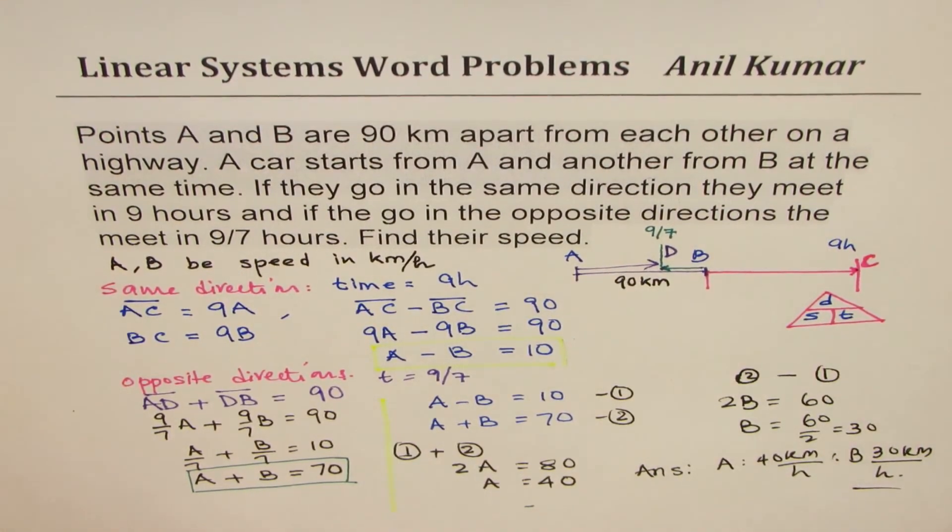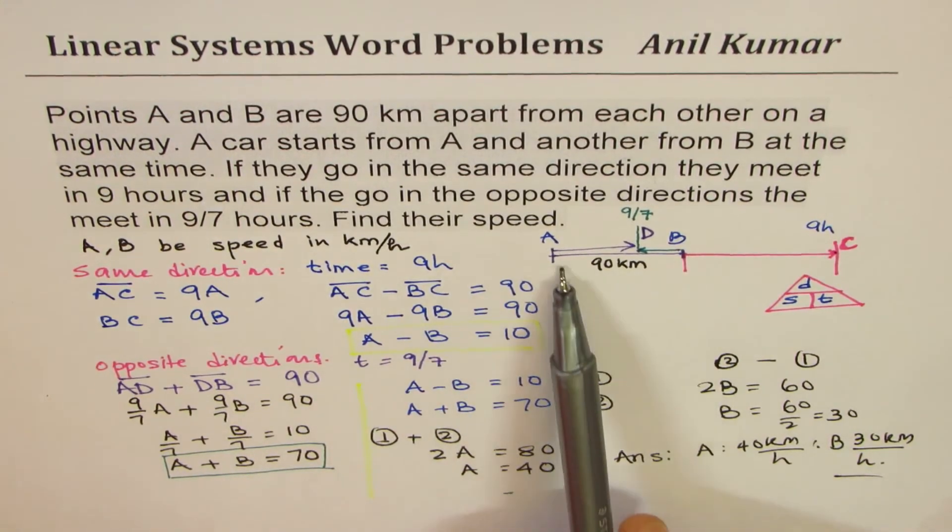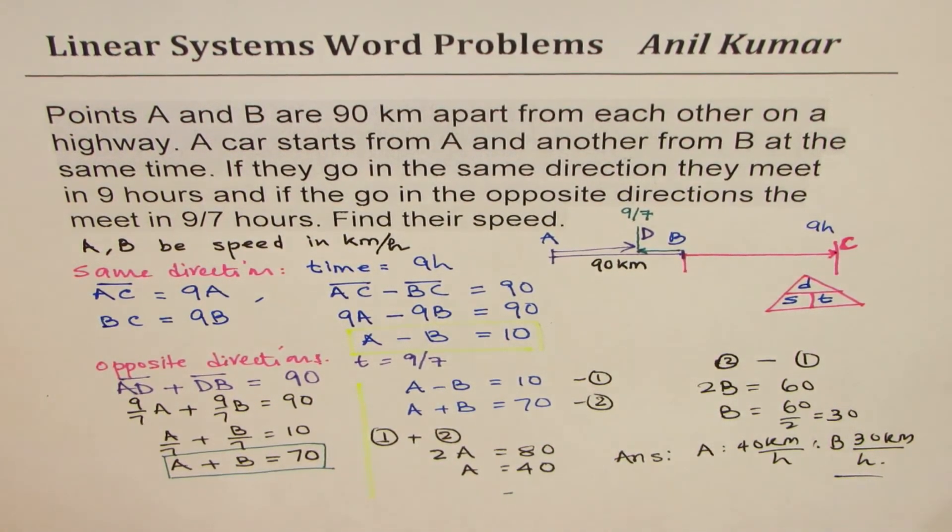So that is how you could solve this question. So it's kind of a tricky question. However, you realize how we have utilized the distance between the two given to us as 90, in forming two different equations, and then solving them. I hope that really helps you to understand a very important concept. Feel free to make your suggestions and your views, and if you like and share my videos, that would be great. Thank you, and all the best.